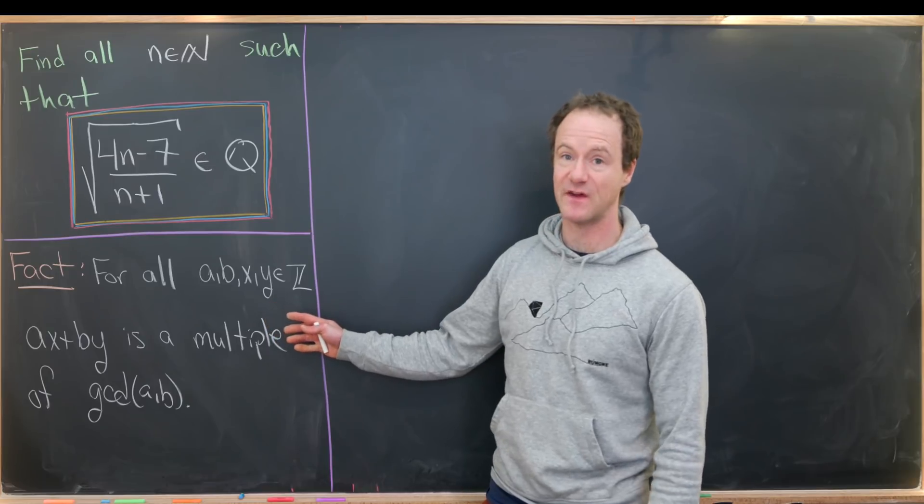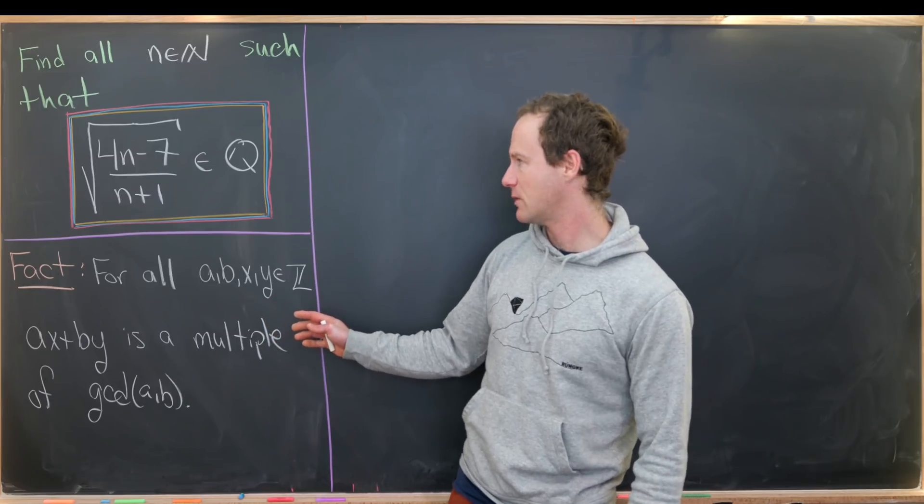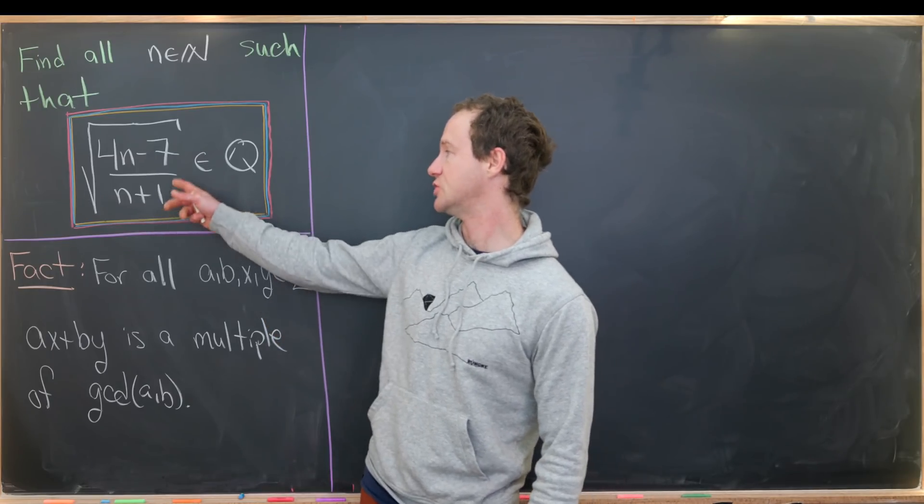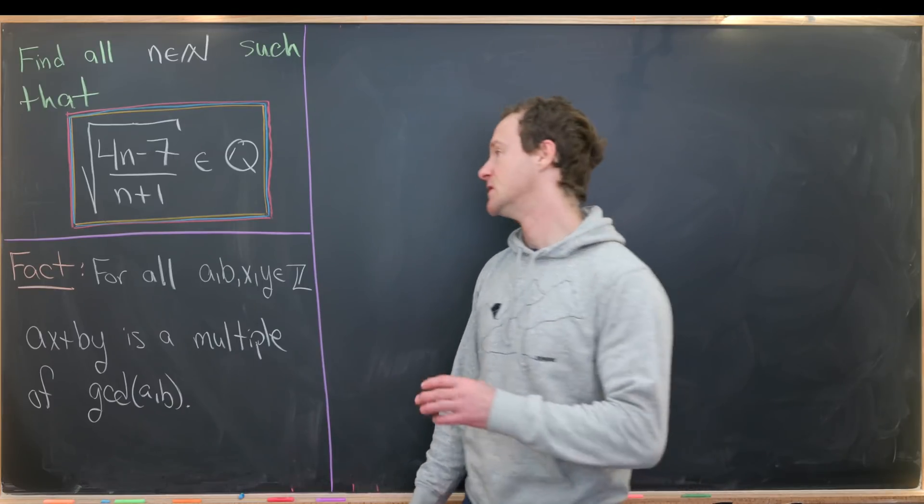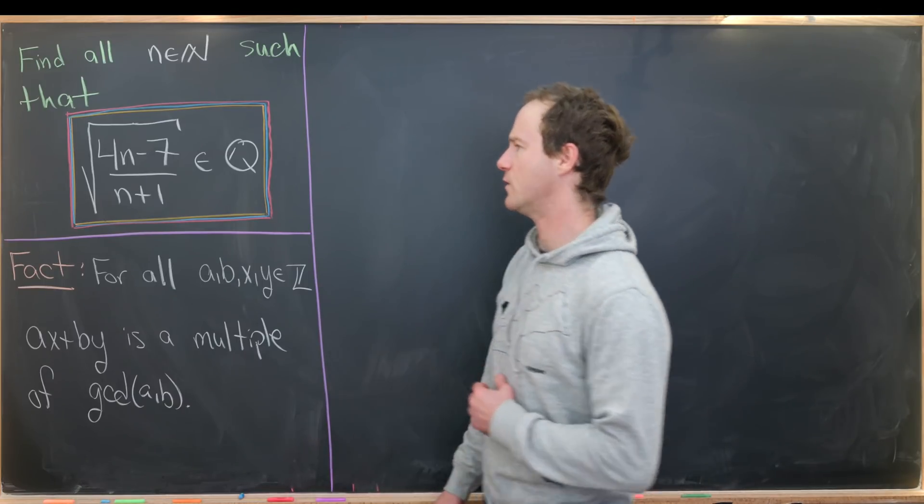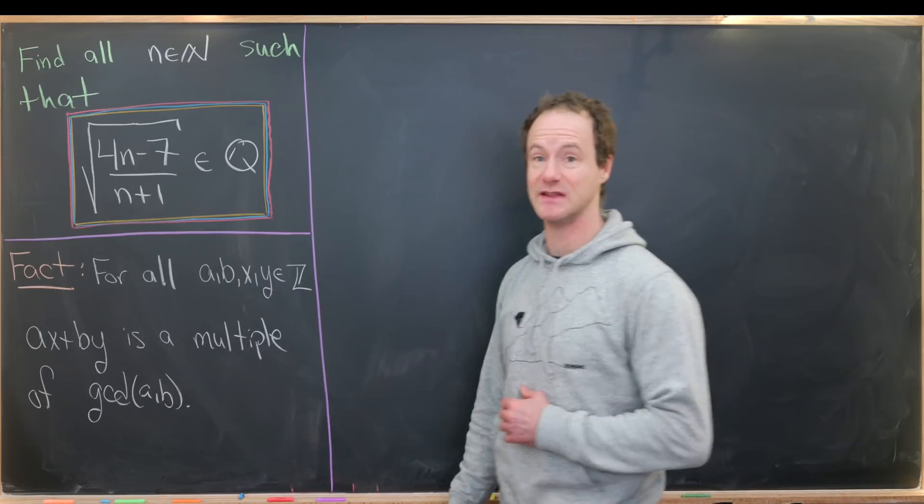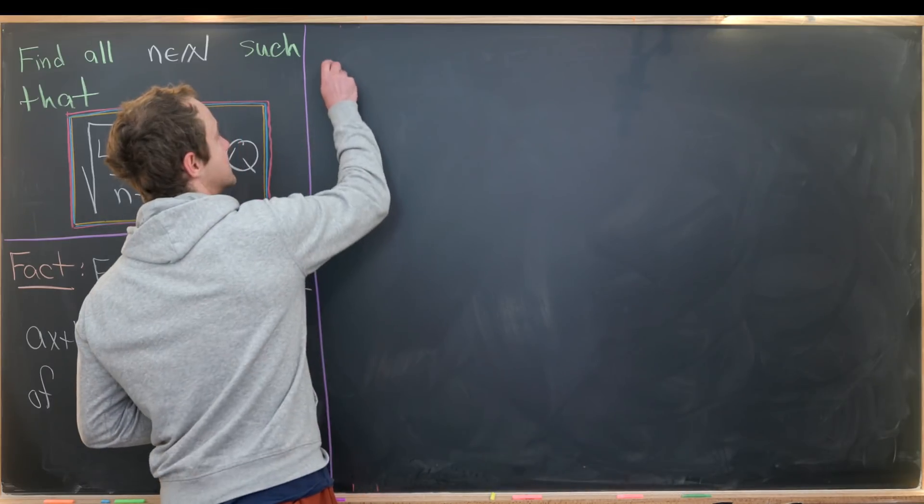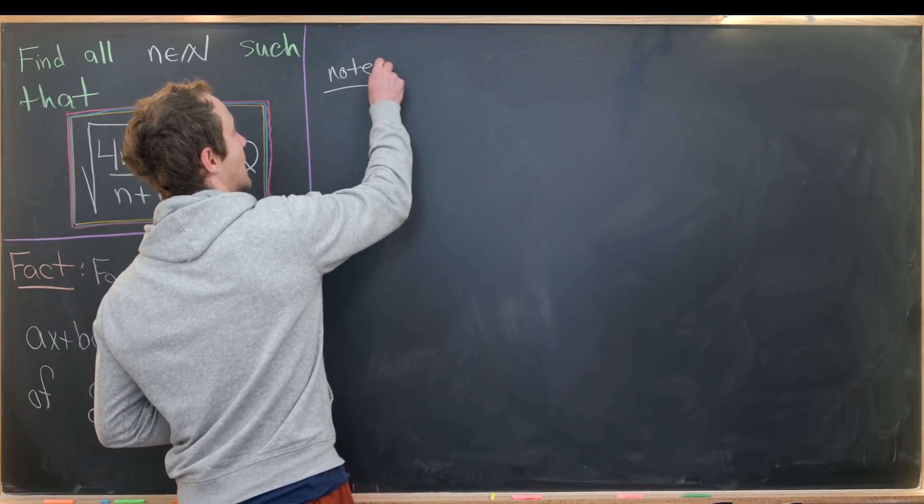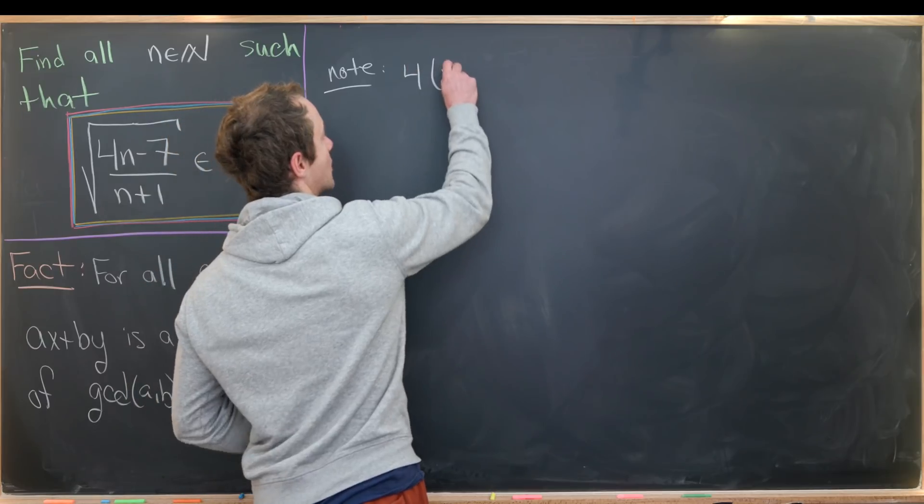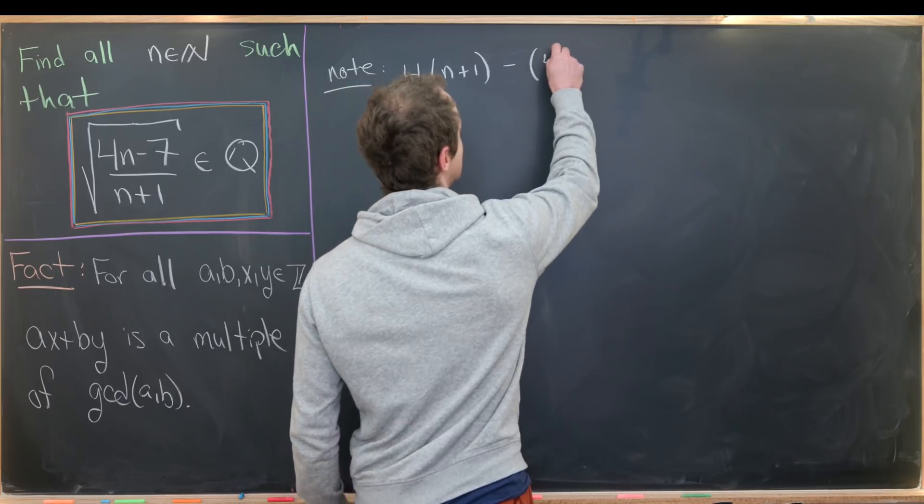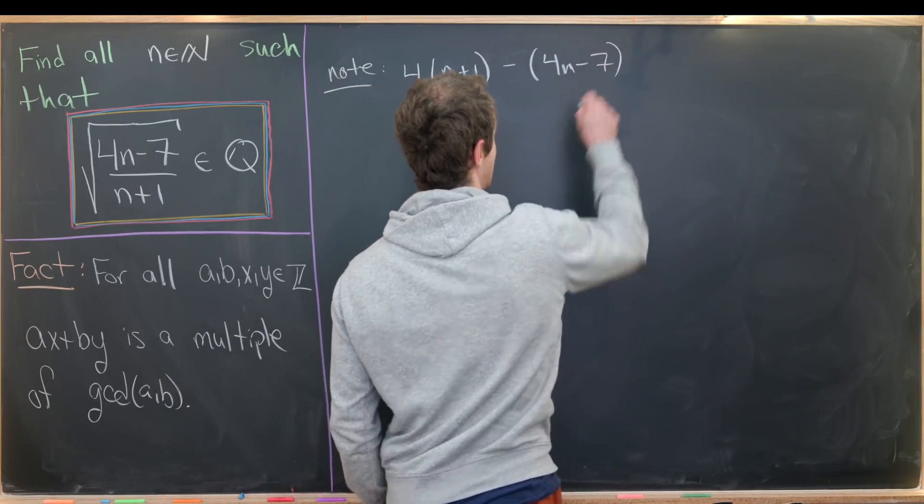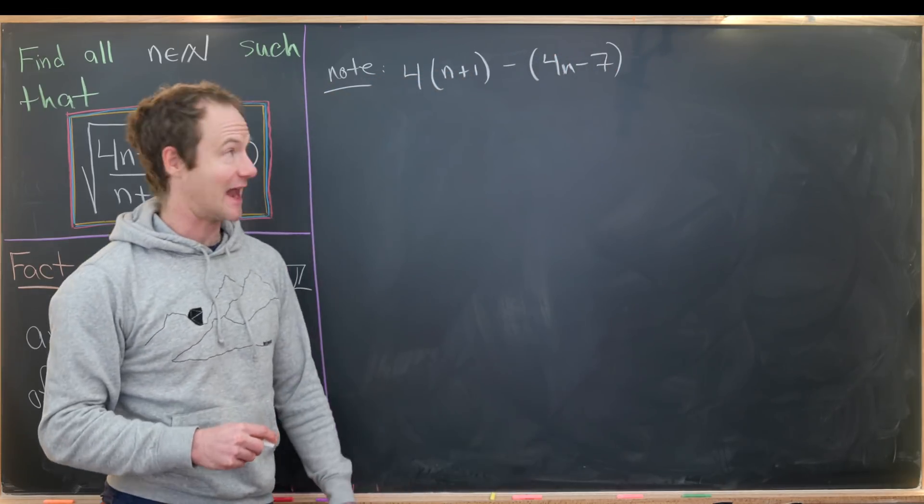All right, so let's get into it. Given the fact that I've got this on the board, we probably want to use it with the other two objects on the board—that would be the numerator and the denominator. Let's do that in a way that we can maybe cancel out the n's. We could do that with the following observation: if we take 4 times (n+1) and then we subtract 4n-7...